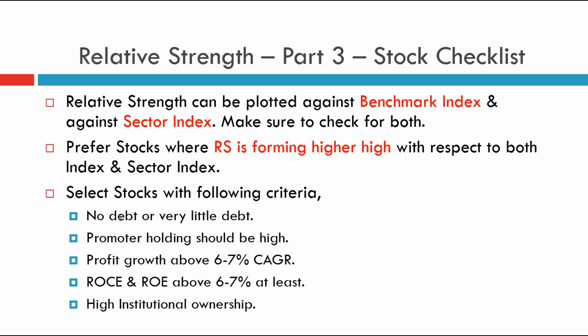The last step is the stock checklist. What I've shown in examples is stocks plotted against the benchmark index, but if you want to go a step further you can also plot relative strength charts for stocks against their own sectors. For example, with Hindustan Unilever you can do RS analysis against Nifty 50 and also against the consumer durables index. If a stock shows higher-high relative strength on both the benchmark index and the sector index, that stock is a high-probability trade — keep it on your watch list.